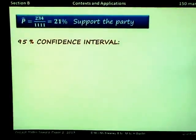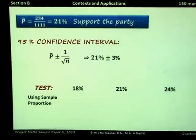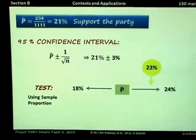If we want to construct a 95% confidence interval, we use P-hat plus or minus 1 over root n. P-hat worked out as 21%, and the margin of error was plus or minus 3%. We can then construct an interval here. 3% either side of 21 gives you 18 or 24. Our population value was 23%, and 23% is within this interval. Because your population value is within your interval, this means you're going to accept the null hypothesis. We're going to accept H0.